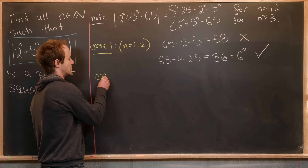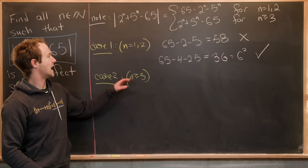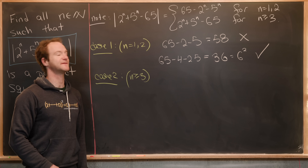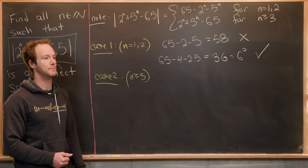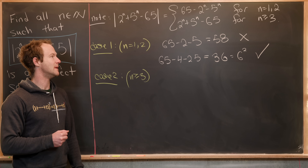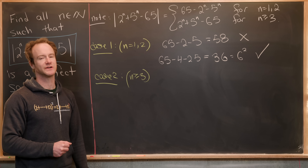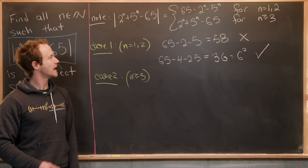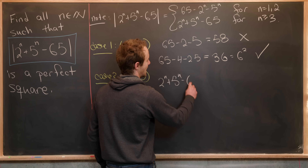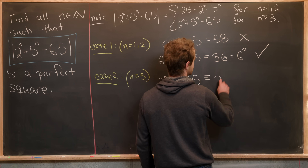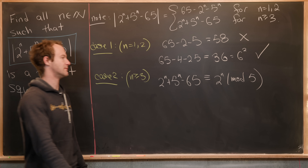Now let's look at Case 2: n greater than or equal to 3. Here we need to consider 2 to the n plus 5 to the n minus 65. Using the number theory hints built into the problem, we should work mod 5. For n greater than or equal to 3, those first two cases are easy to check by hand. Reducing mod 5, we get that 2 to the n plus 5 to the n minus 65 is congruent to 2 to the n modulo 5.